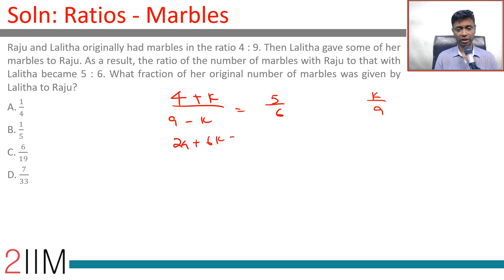24 plus 6k equals 45 minus 5k. 6k plus 5k is 45 minus 24. 11k equals 21. K is 21 by 11.